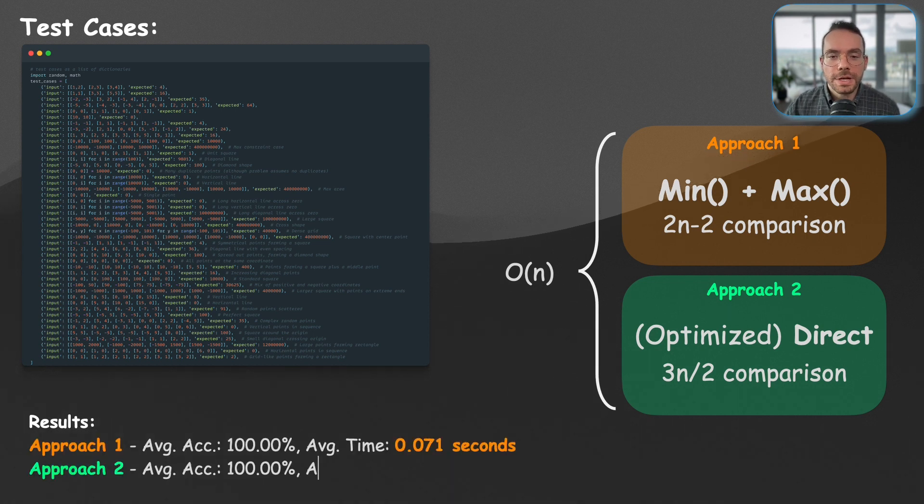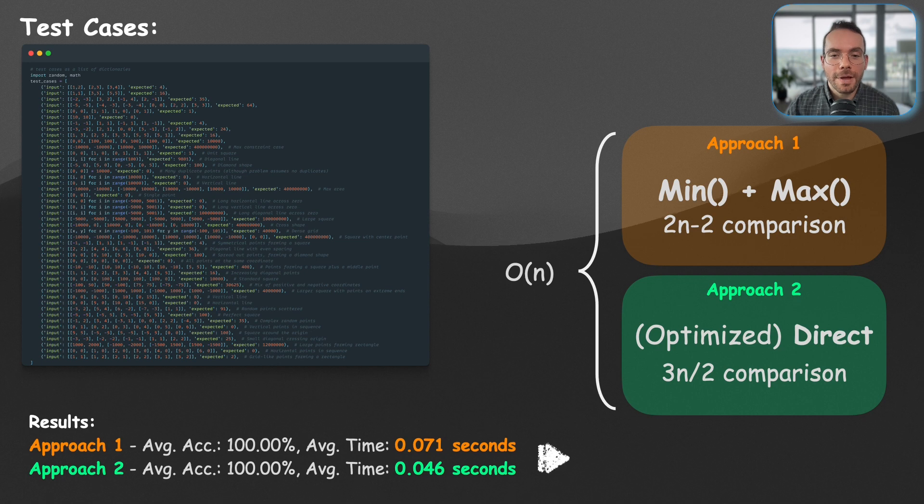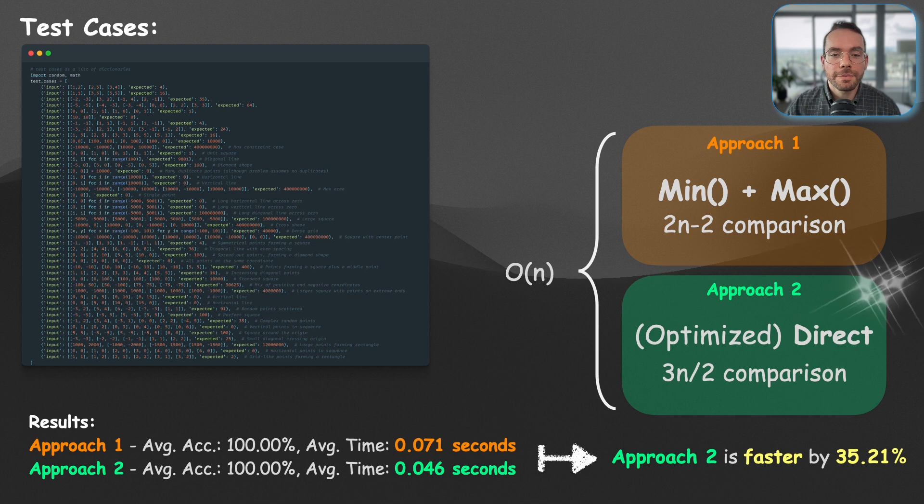And here's the result. While both approaches were 100% accurate, one of them, approach number two, the optimized direct comparison approach, was 35% faster.